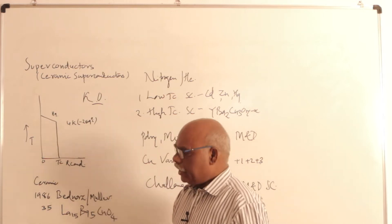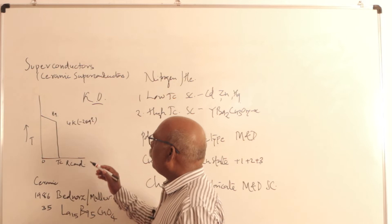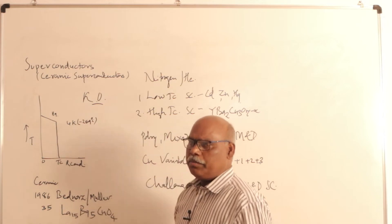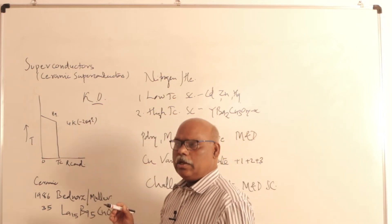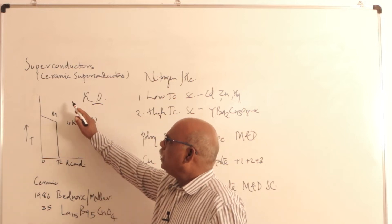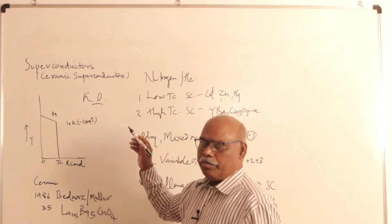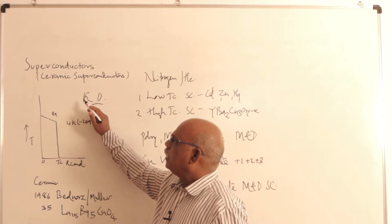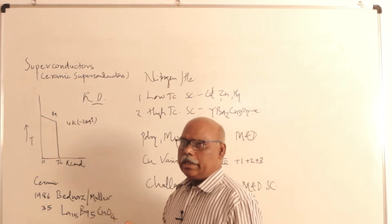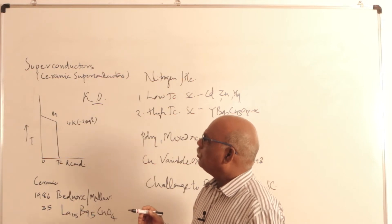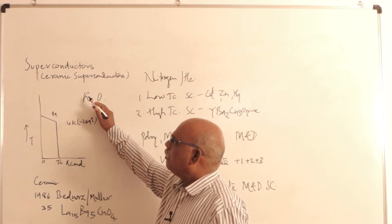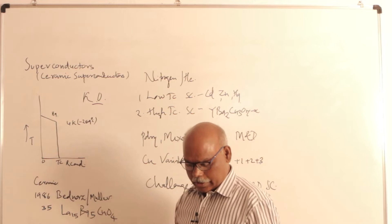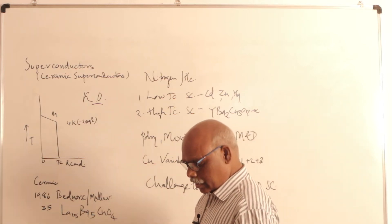Now we shall see what a ceramic superconductor is. Ceramic is any material which is purely inorganic in nature and is prepared or obtained through high temperature processing. Such a material is known as a ceramic material. They are mixed oxide type of materials, and most superconductors are mixed oxide type of materials — hence they are also known as ceramic superconductors.